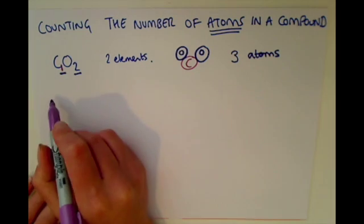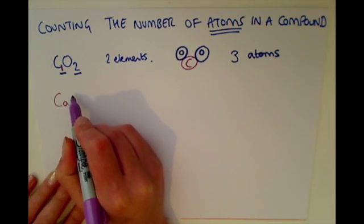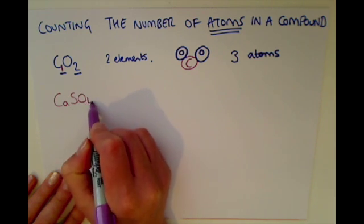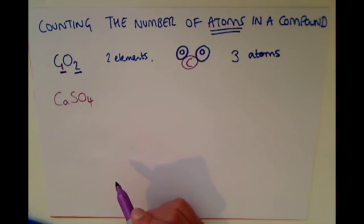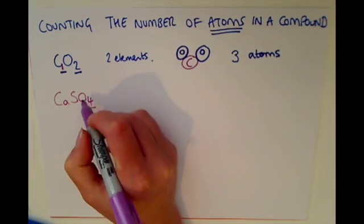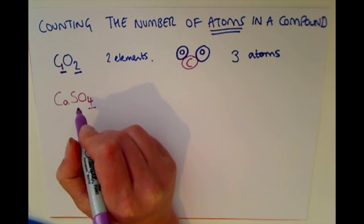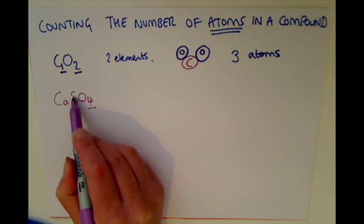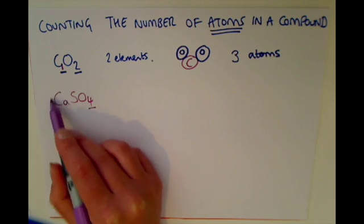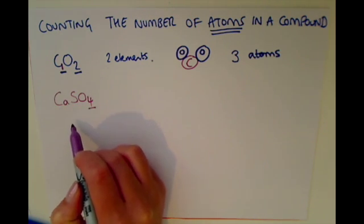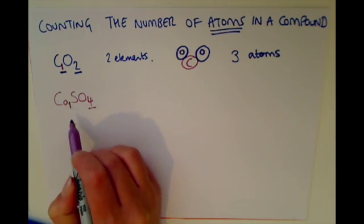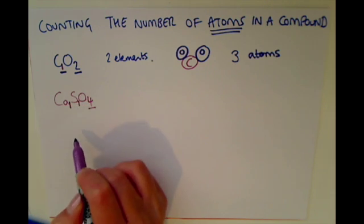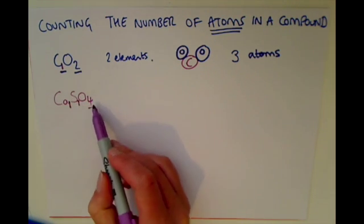So for another example, if you have CaSO4, the number four tells us that there's four oxygens. There's no number next to the S for sulfur and there's no number next to the Ca. That tells us that there's one Ca and one sulfur.